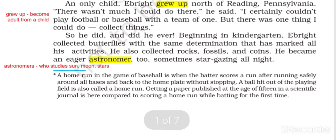A home run in the game of baseball is when the batter scores a run after running safely around all bases and back to the home plate without stopping. A ball hit out of the playing field is also known as a home run. Getting a paper published in a scientific journal is here compared to scoring a home run while batting for the first time — equal to a 15-year-old playing in a big tournament for the first time and scoring a home run on the first attempt.